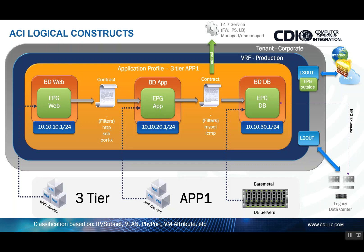If you have a legacy data center or switching environment that you need to connect to for migration reasons, or for extending to a separate firewall or router, you can achieve this in two ways: one being an EPG extension, and the other through something called a Layer 2 Out. In my experience, I've primarily used EPG extensions as a form of connecting external devices and networks. Layer 2 Out is really only viable when you need to apply a contract to the external Layer 2 device. There are different use cases, but I've used EPG extensions more often.